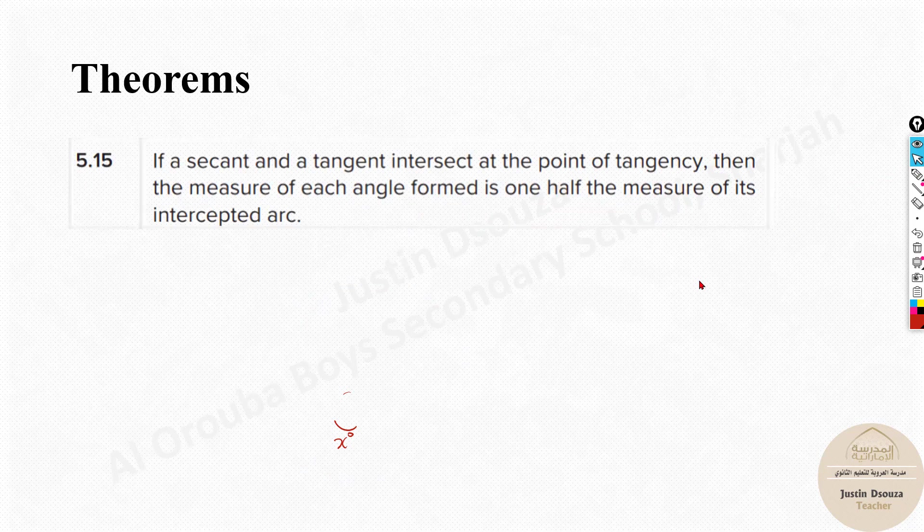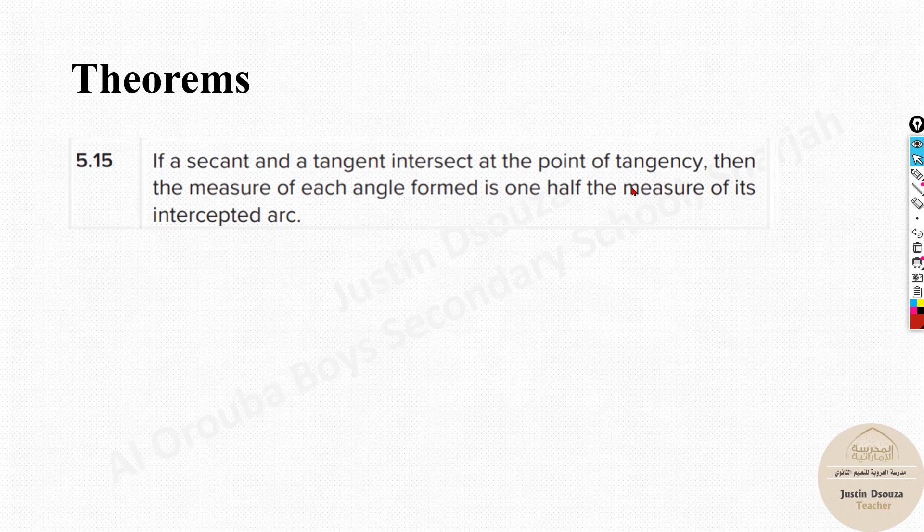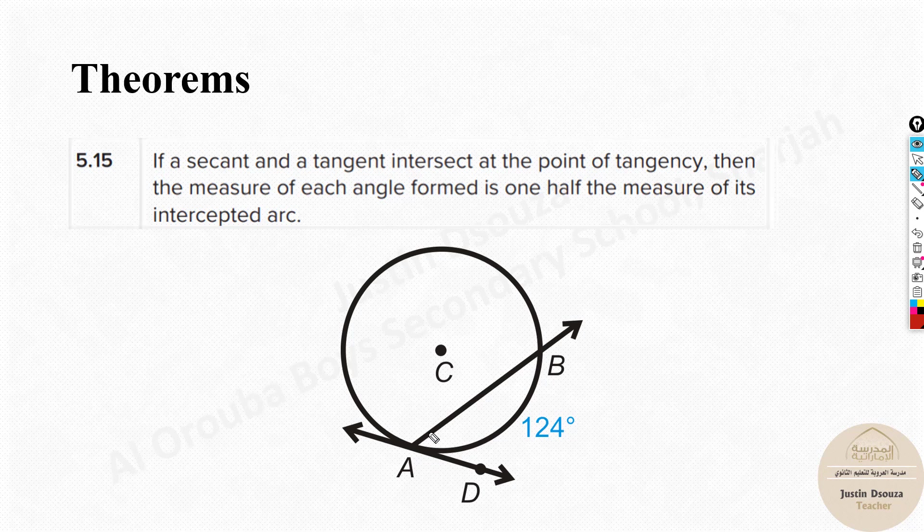Now the next theorem over here is about secant and a tangent line intersecting at point of tangency. This is important because this is exactly at the point of tangency. Wherever this point of tangency is there for this tangent, there a secant line is intersecting. In such cases, it's very simple. Whatever this arc is there, the outer arc of the circle, the angle will be half of it. That's it. Now over here, it will be half of 124 because the outer arc is 124. It's a very simple one, this one.